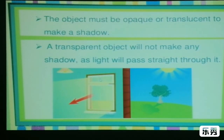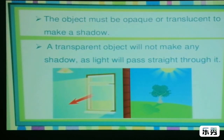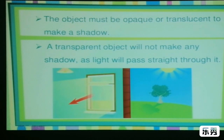The object must be opaque or translucent to make a shadow. If we use transparent objects, it will not form any shadow at all, as light will pass through it — just like the glass window.